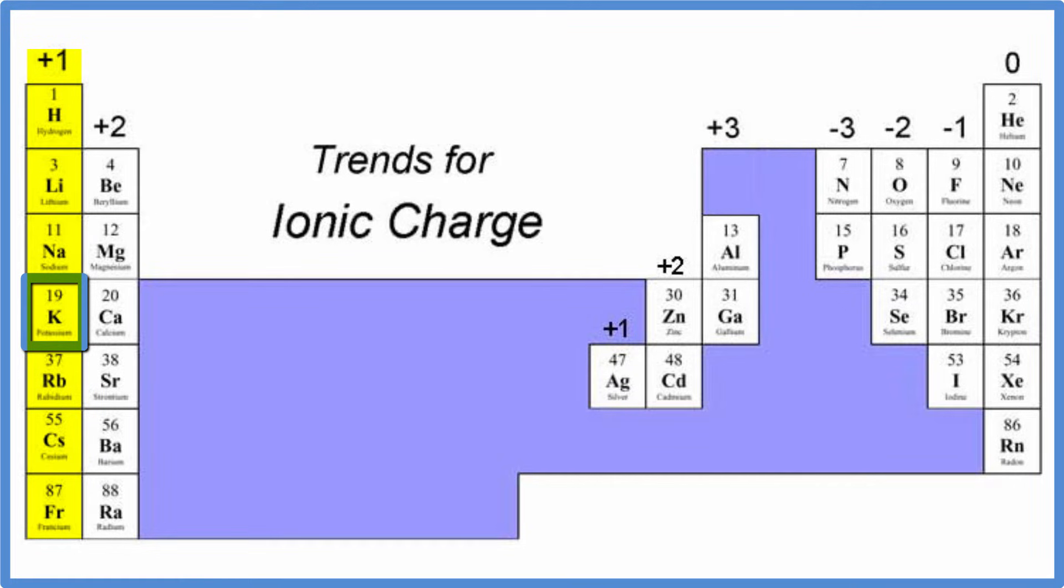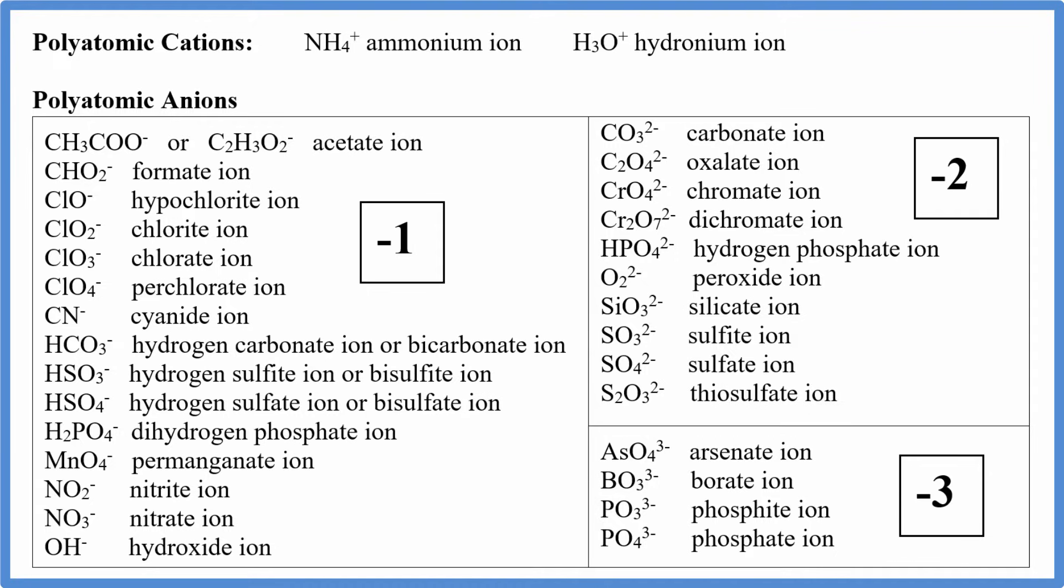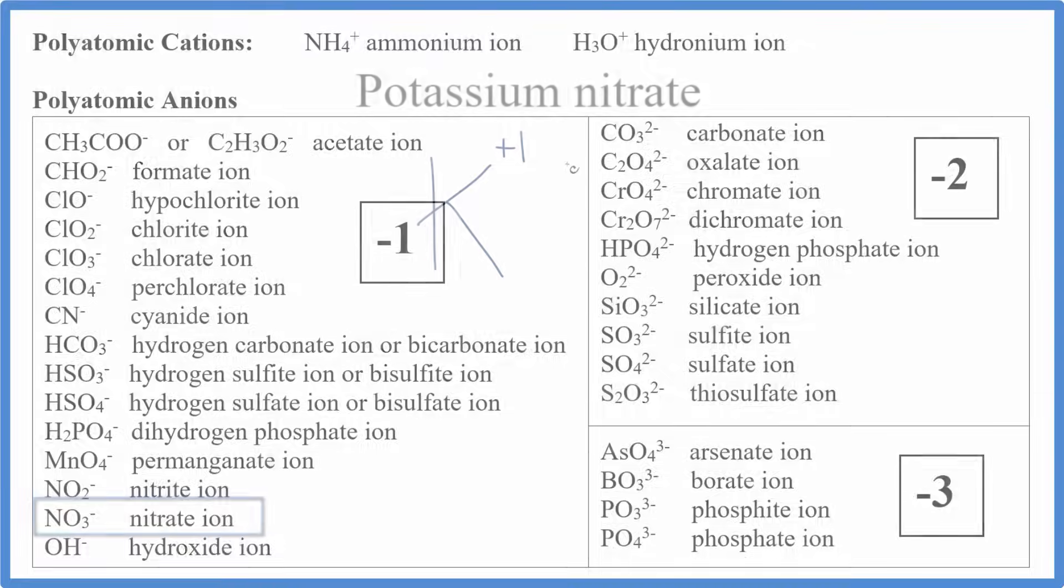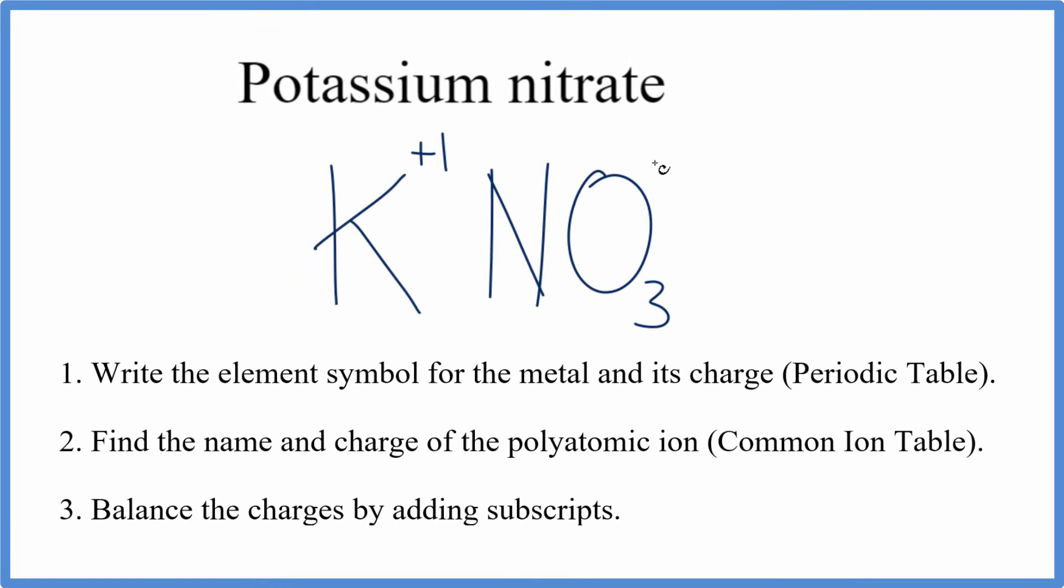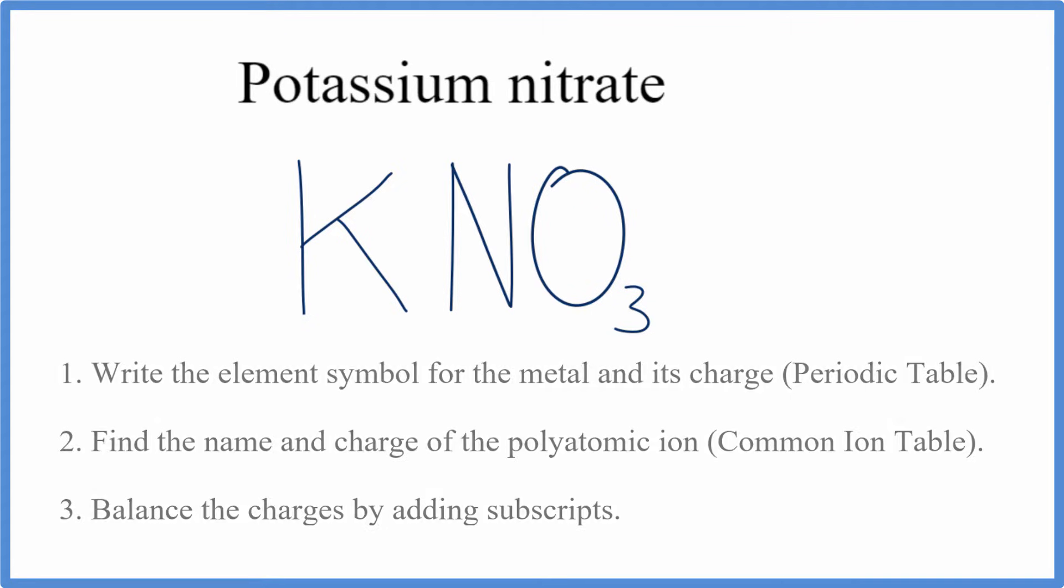For the nitrate, we're not going to find that on the periodic table. We need to go to a common ion table and look that up. We can see that nitrate is NO3 minus. So we write NO3 minus, and now we just need to balance the charges. Potassium has a plus 1 charge, and then the nitrate has a minus 1 charge. Because the plus 1 and the minus 1 cancel out, that leaves us with KNO3 as the formula for potassium nitrate.